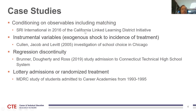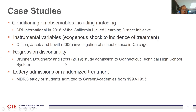The first case study is the California Linked Learning District Initiative, conducted using controlling on observables including matching. The second is an instrumental variables approach where the exogenous shock is distance to a career academy. The third is a regression discontinuity approach — my recent paper with Eric Brunner and Sean Daugherty. And the fourth is the very famous MDRC study of lottery admissions to career academies embedded within high schools.